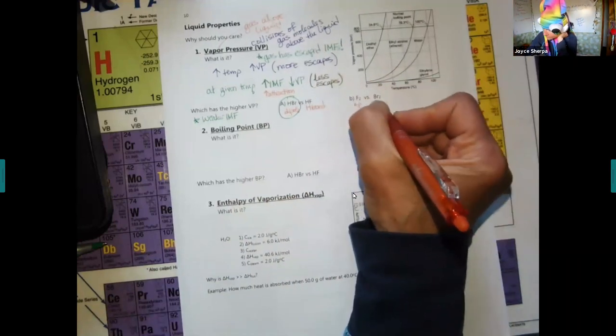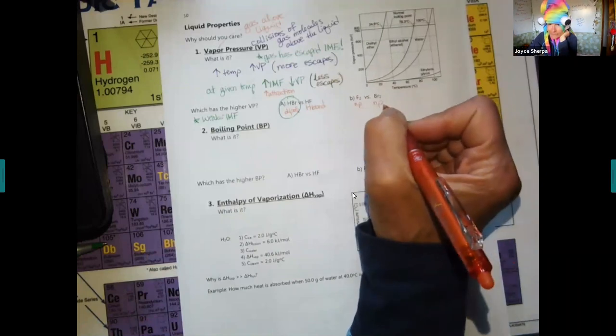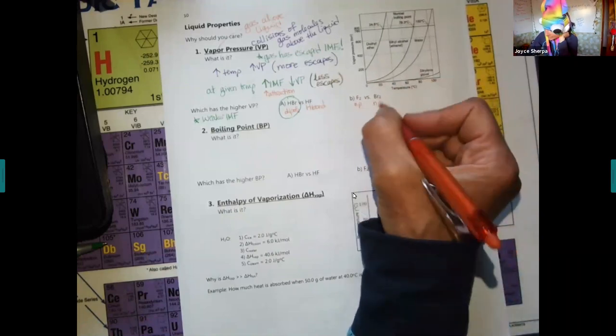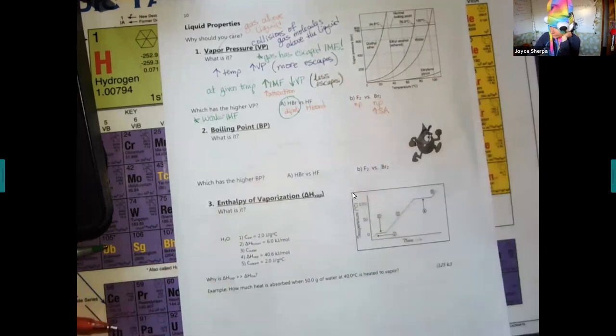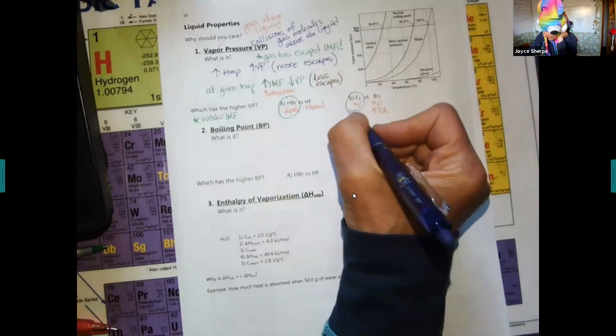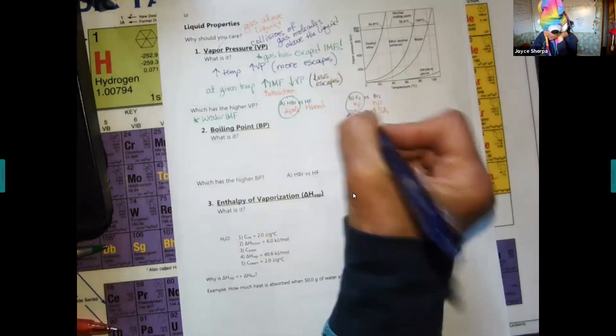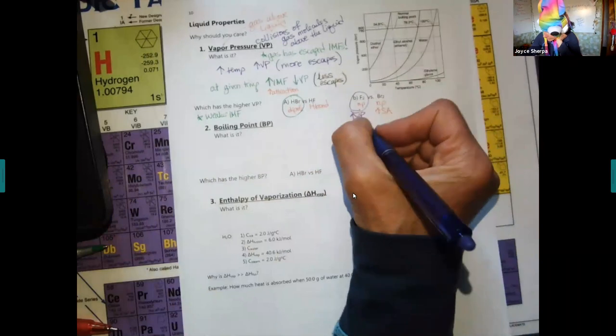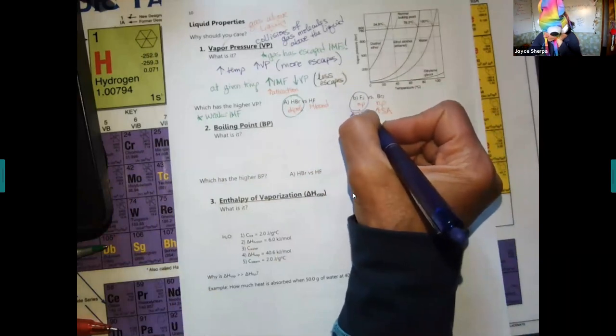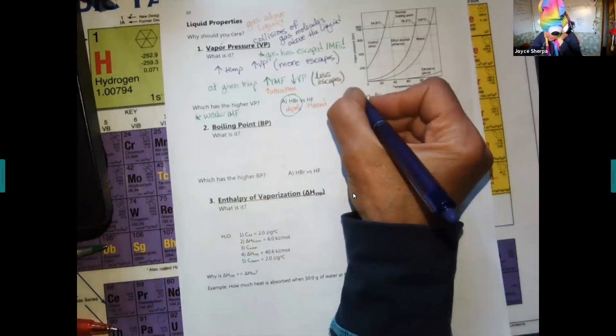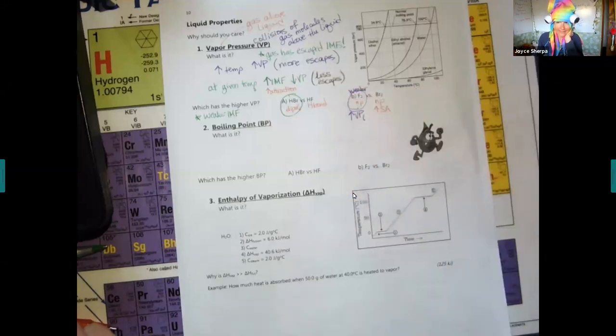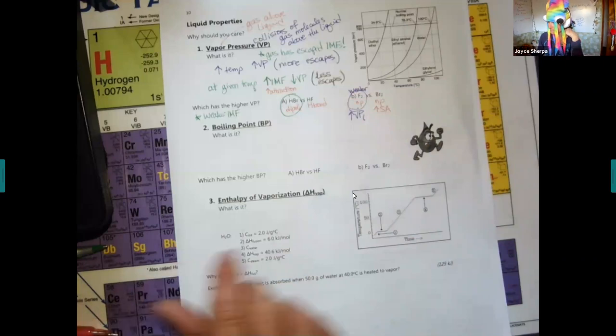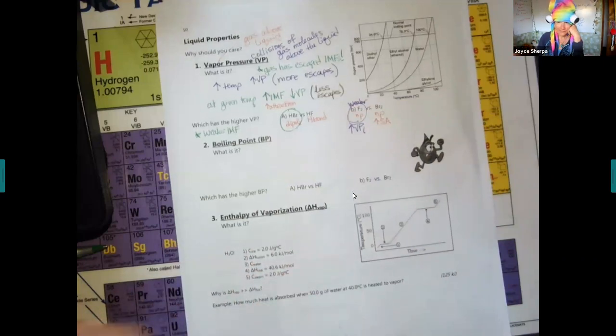Fluorine and bromine, they're both nonpolar. This one is larger IMF, larger surface area. This one's going to have the higher vapor pressure because it's weaker.